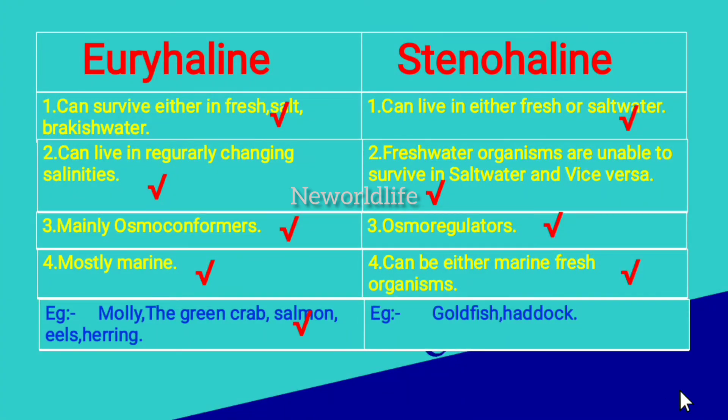Examples of Euryaline organisms include molly, the green crab, salmon, eels, and herring.